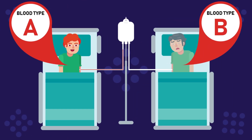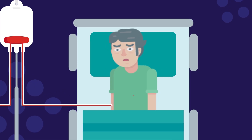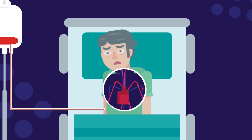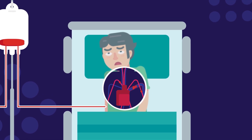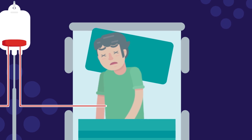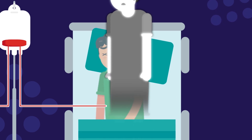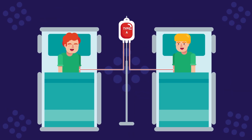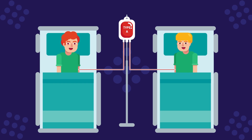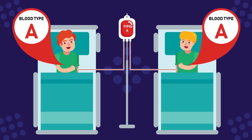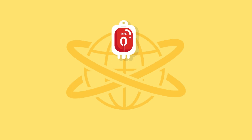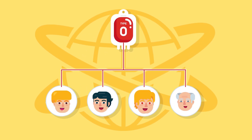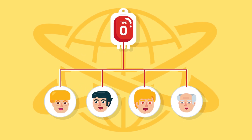If the blood types are not compatible, red blood cells will clump together, making clots that can block blood vessels, causing a potentially fatal situation. Therefore, it is important that blood types are matched before blood transfusions take place. In an emergency, type O blood can be given because it is most likely to be accepted by all blood types.